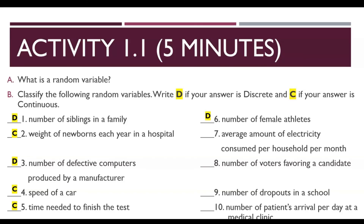Average amount of electricity consumed per household per month — you cannot count it, so it is C — continuous. Number of voters favoring a candidate — you can count it, therefore it is D. Number of dropouts in a school — you can count it, so it is discrete. Number of patients arriving per day at a medical clinic — you can count it, therefore the answer is D — discrete.